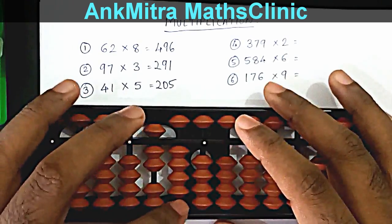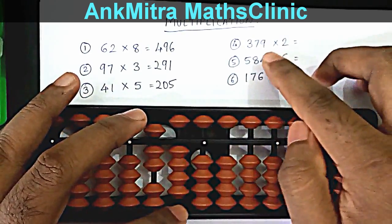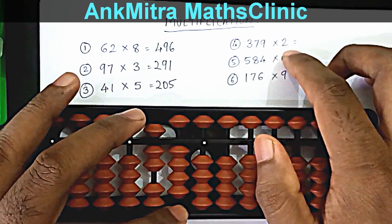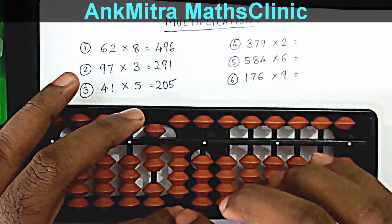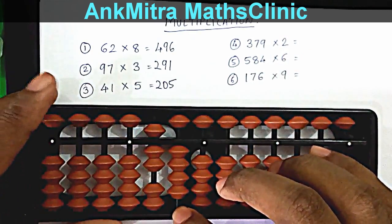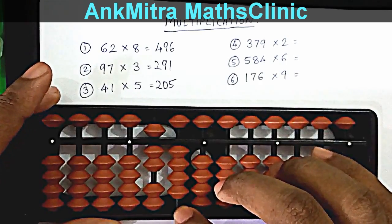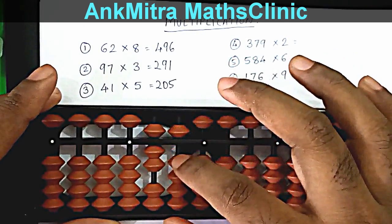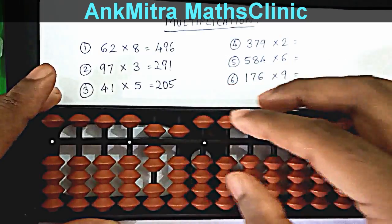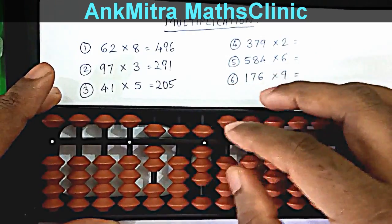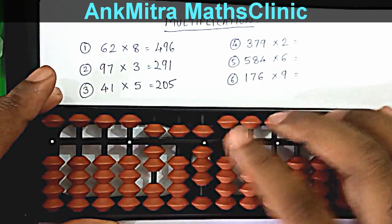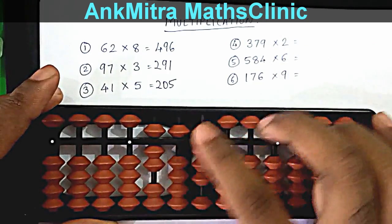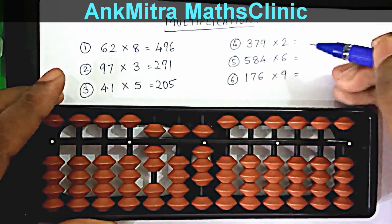Shift one more place to the right on the tens place and find 9 times 2: 9 times 2 is 18, so add 18 from the tens place. Here I need to use the small friend formula for 1 — plus 5 minus 4 — and then 8 on the units place. The answer for 379 multiplied by 2 is 758.